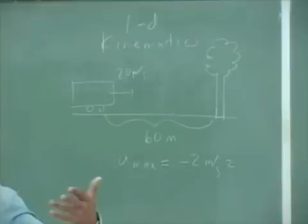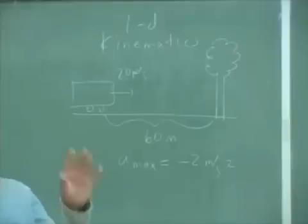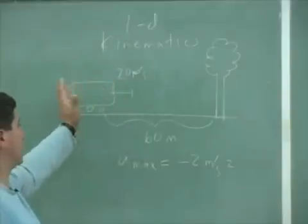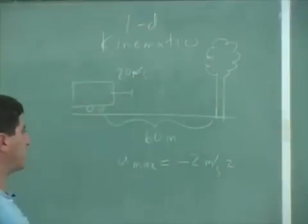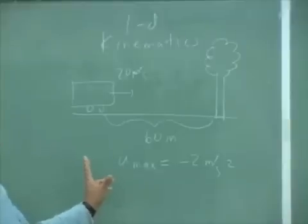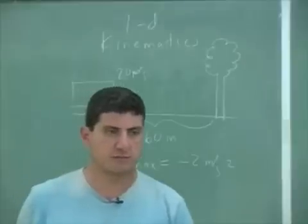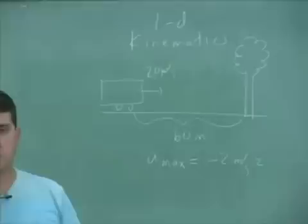That's a typical linear kinematic problem. It gives you some information, and then based on that information, you're supposed to answer a certain question. In this case, the information it's giving you is the initial velocity of the car, it's telling you there's a tree 60 meters ahead, it's telling you the maximum acceleration of the car is negative two, and the question might be: is the car going to hit the tree?